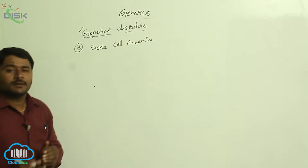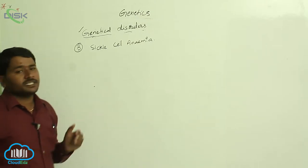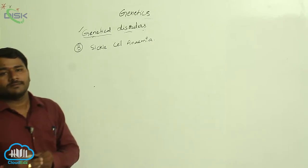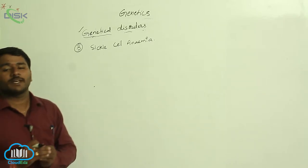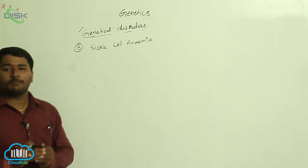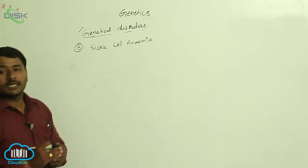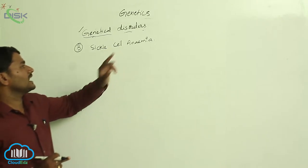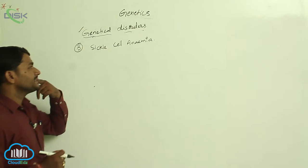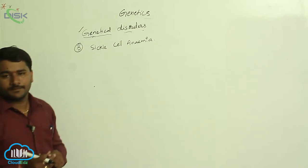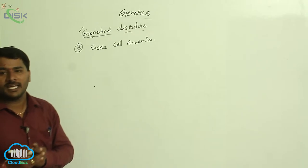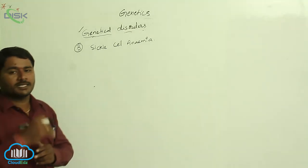When this RBC structure is changed into sickle shape, it will not carry oxygen. The people will face the problem of anemia. Especially, hypoxia conditions can be seen in sickle cell anemia people. This is also a disorder — it is an autosomal disorder.